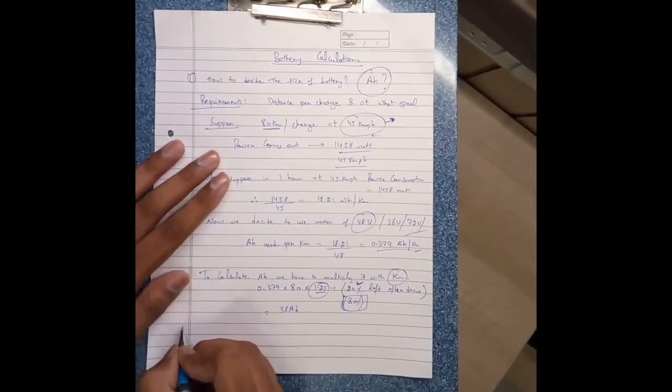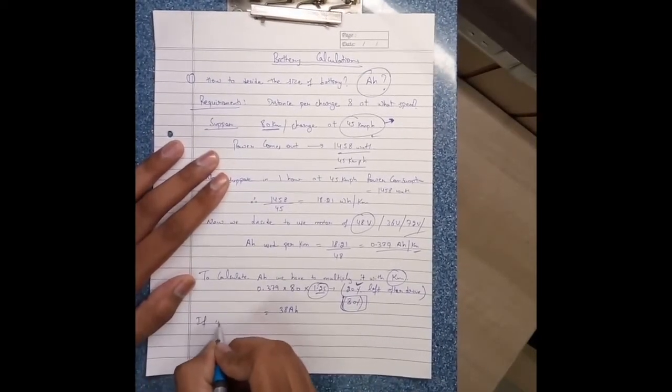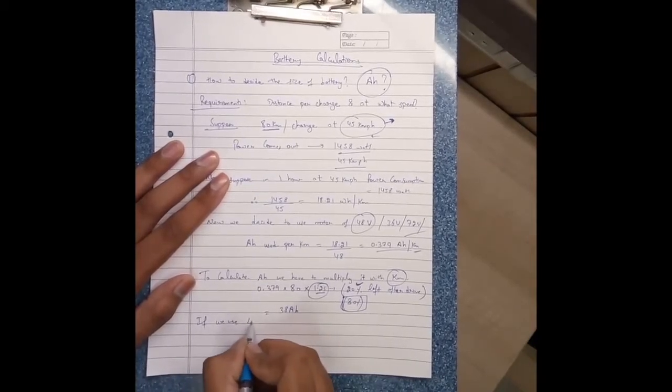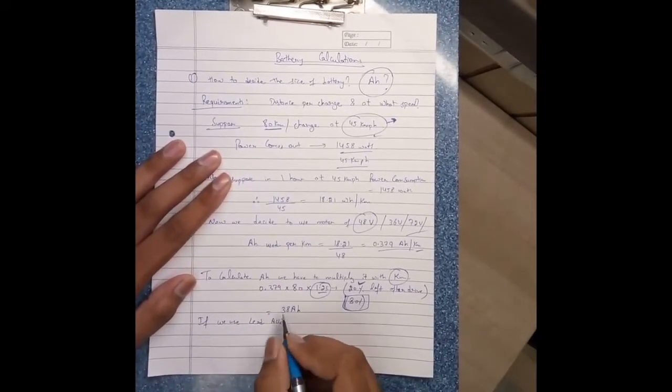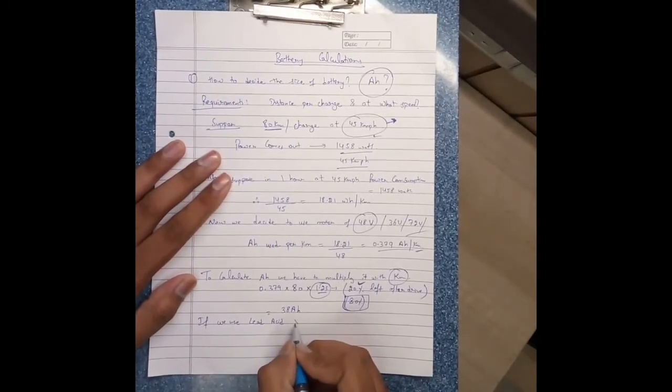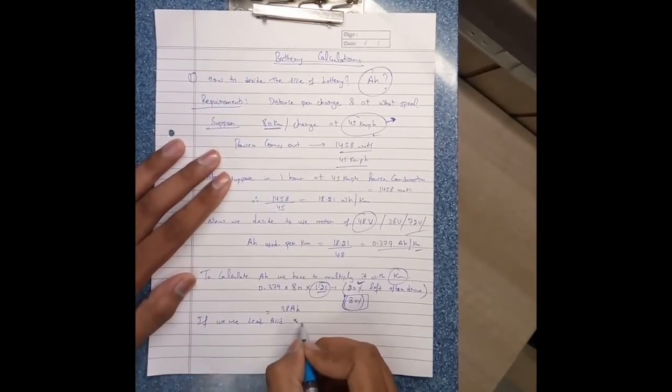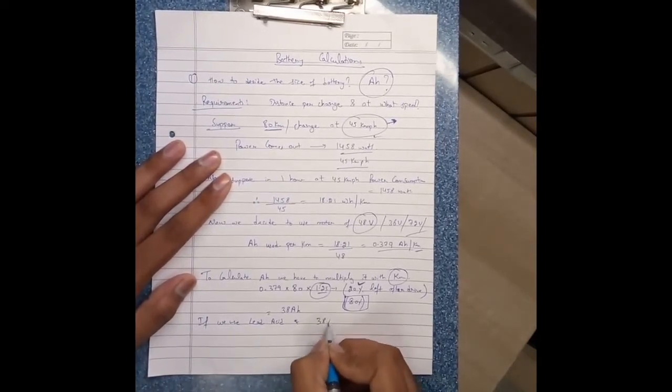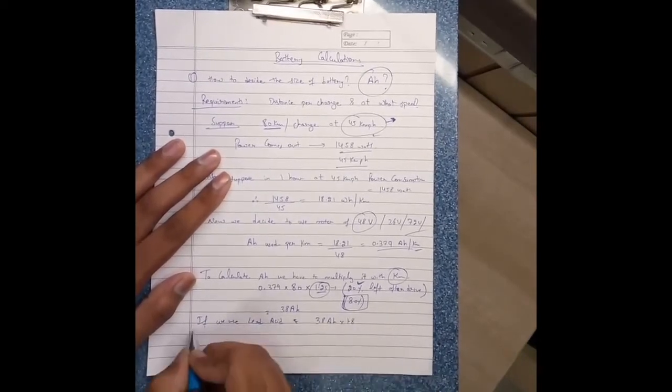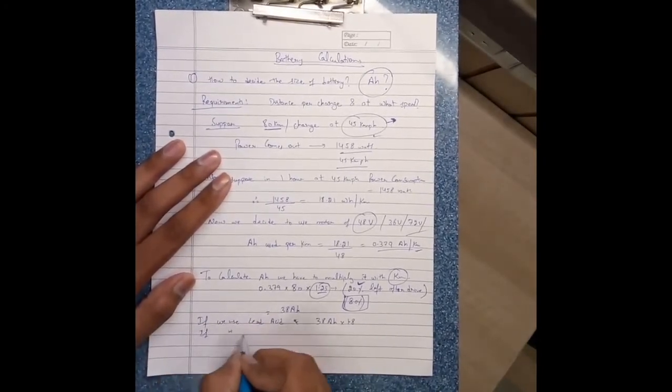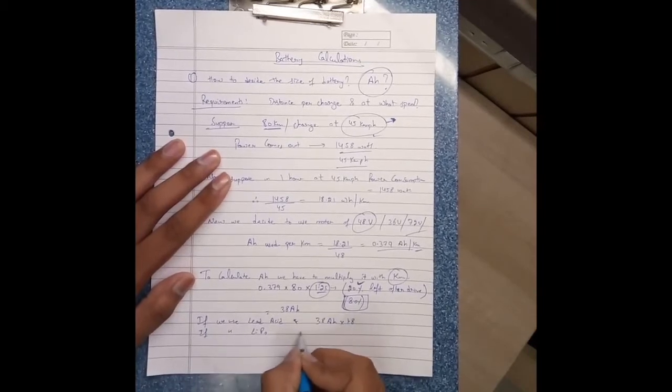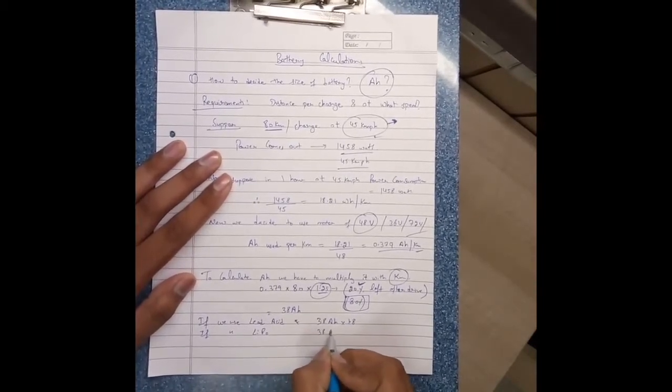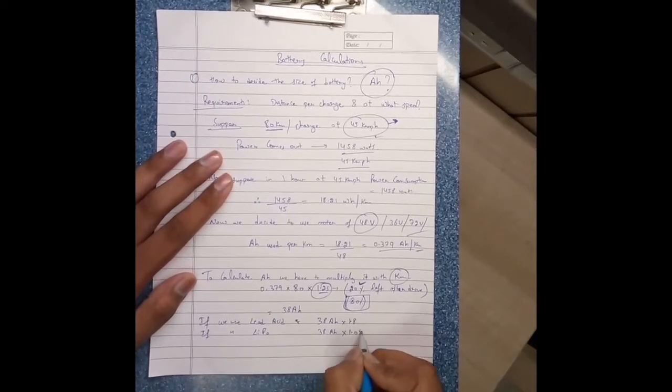Now if we use lead acid, then multiply 38 ampere into 1.8. If we use lithium polymer, then 38 ampere into 1.05.